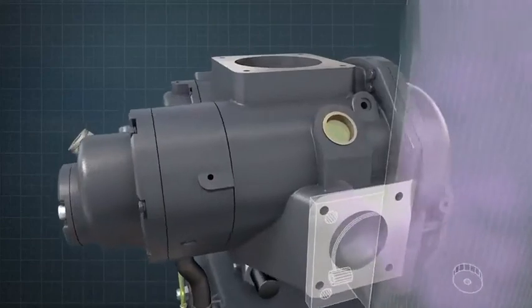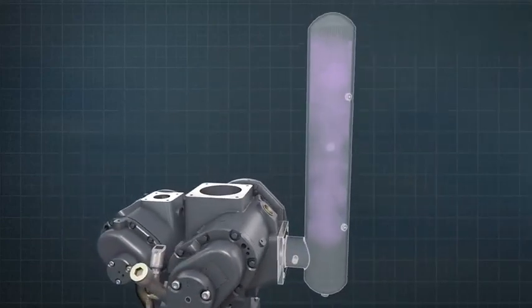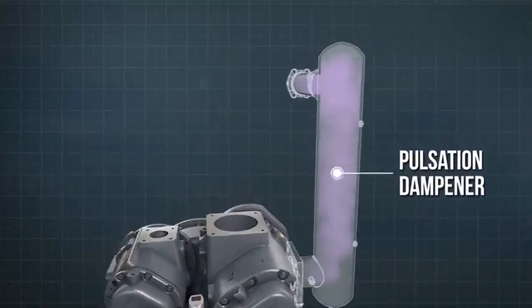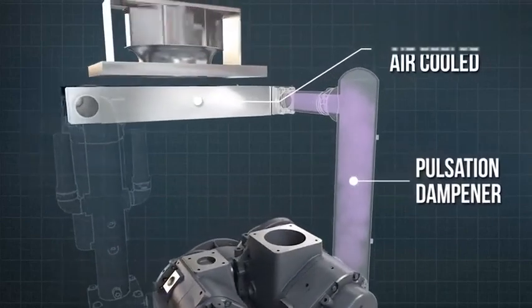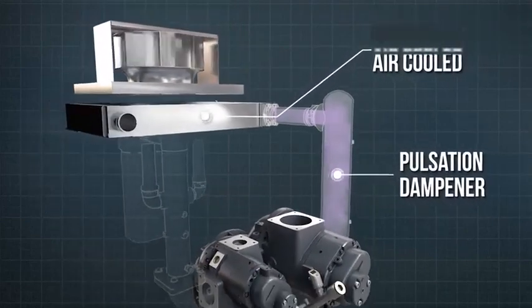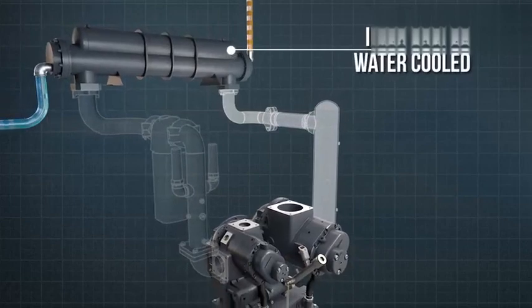After leaving the first stage, the compressed air passes through a pulsation damper, then onto a first stage or interstage cooler. This can either be air or water cooled, depending on the model of compressor.